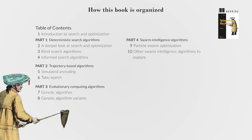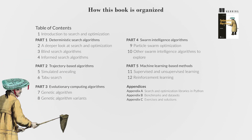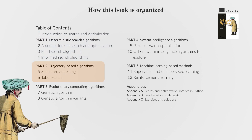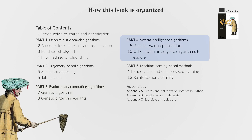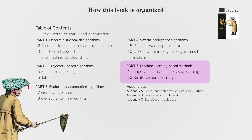The book is divided into five parts, with 12 chapters and three appendices. Part 1 covers foundational concepts and deterministic graph search algorithms. Part 2 progresses into trajectory-based algorithms like simulated annealing and taboo search. Part 3 focuses on evolutionary computing algorithms, delving into genetic algorithms and their applications. Part 4 explores swarm intelligence algorithms and their nature-inspired problem-solving capabilities. Part 5 converges on machine-learning-based methods, bridging machine learning and optimization to address complex problems.